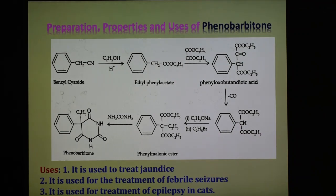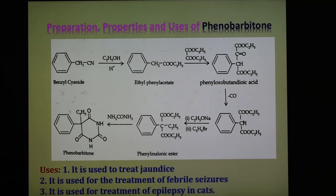Phenobarbitone has several important applications. It is used in the treatment of febrile seizures and in the treatment of epilepsy, also in cases of jaundice. Sedation and hypnosis are the principal side effects. It can also be used for the relief of cyclic vomiting syndrome.